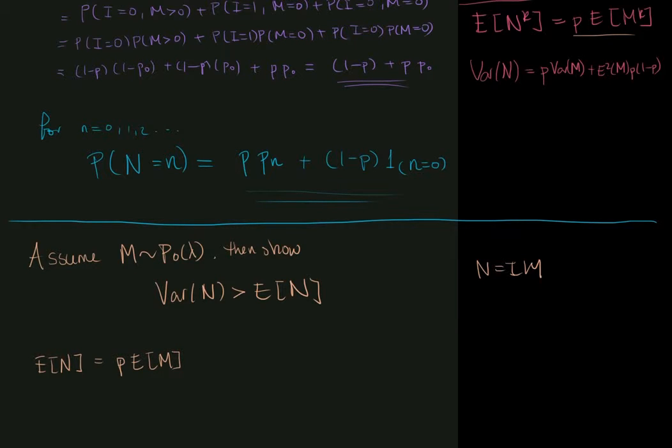We also know from part a that the variance of n is given by p multiplied by the variance of m plus the mean of m squared, multiplied by p times 1 minus p.